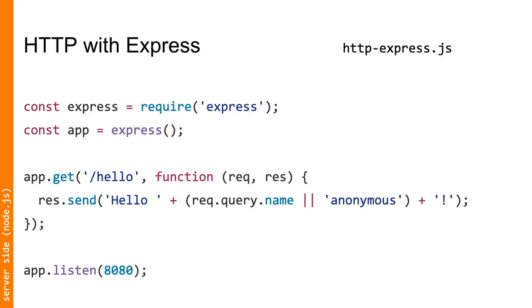Here we bound a route on /hello. In this example, if you went to localhost:8080/hello in a browser, if no query string was provided it would say 'Hello anonymous'; otherwise it would say 'Hello' followed by the name you sent.